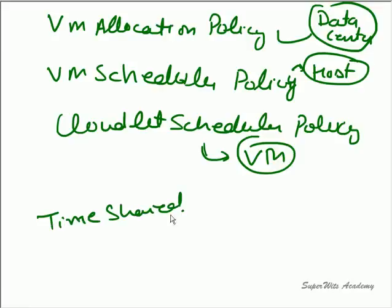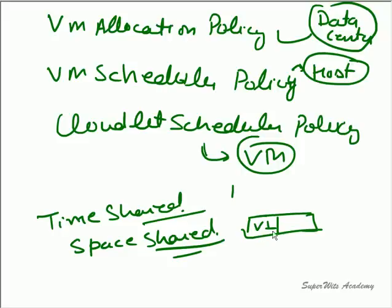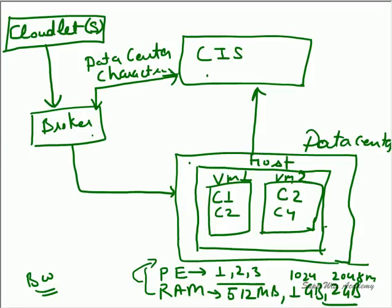All the policies are either time-shared or space-shared. In time-sharing, a specific time slice is allocated to each entity — for VMs, each VM gets an equal share of time. In space-sharing, VM1 is fully allocated first, then VM2 is allocated the resources, and so on. These are the basic policies governing this particular scenario.